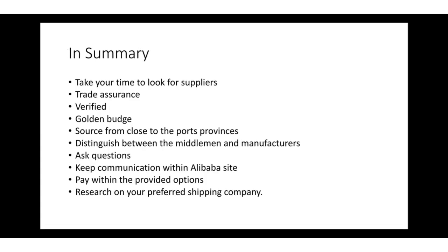Let's do a recap. The first thing we said is take your time to look for suppliers — as many as possible — then qualify them depending on your location, whether they're manufacturers or middlemen, and how they communicate with you. Some suppliers will take a long time to respond and some will be fast. If you find they're friendly, have good customer service, and their reviews are good, those are good suppliers to work with. We also talked about trade assurance — look for suppliers that are verified, have trade assurance, and the golden badge, so that Alibaba will refund you if your goods are of bad quality or never reach you.